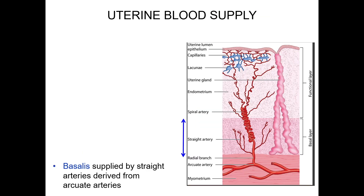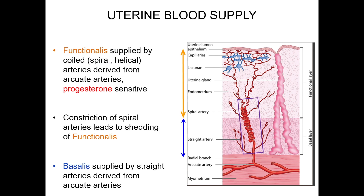These two layers have very distinct blood supplies. The basal layer is supplied by straight arteries derived from the arcuate arteries in the myometrium, and these are not affected in the ovarian cycle by decreased progesterone levels. On the other hand, the functional layer of the endometrium is supplied by spiral arteries, also derived from the myometrium. In the absence of pregnancy, progesterone levels will decrease, and the smooth muscle of the spiral artery will constrict in response. This will decrease the blood flow and cause the functional layer to become ischemic, die, and then slough off as menses.